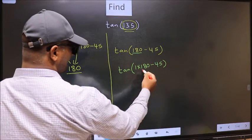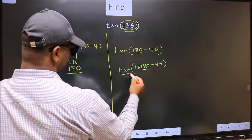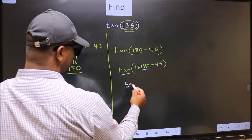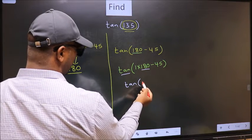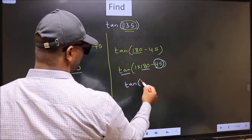Next, here we have 180. So tan is not going to change. It will remain tan. And inside, we get this angle 45.